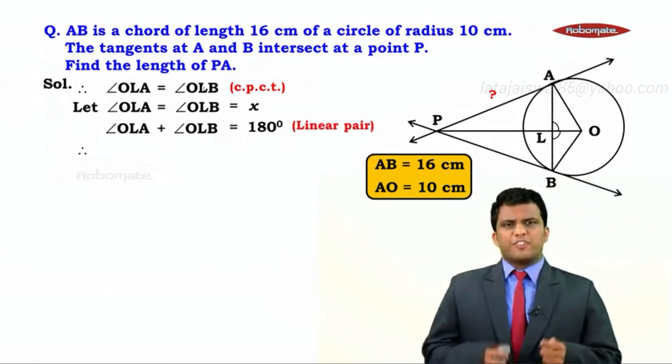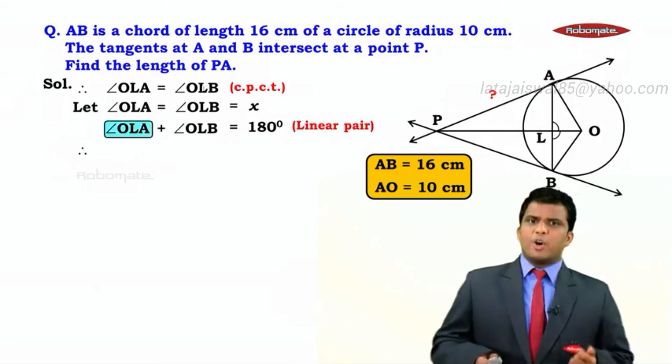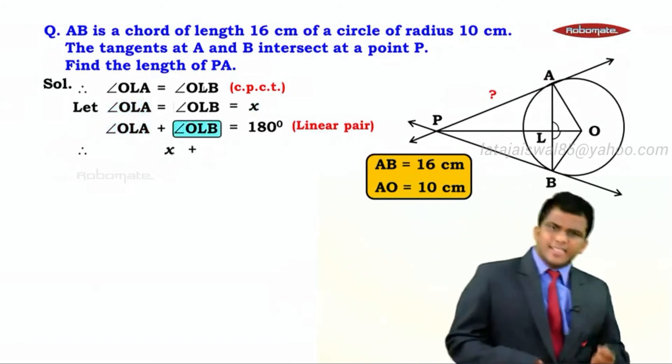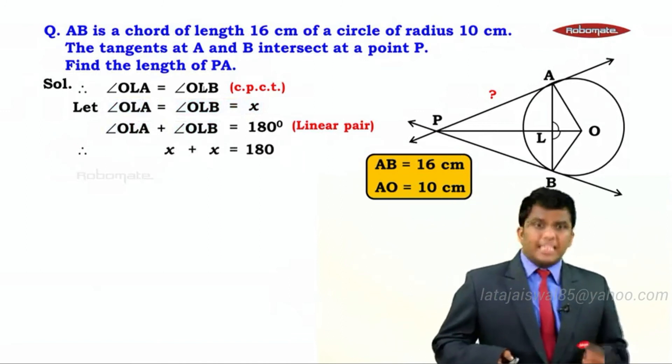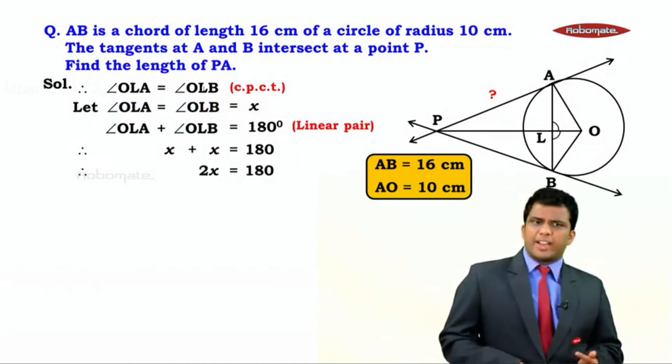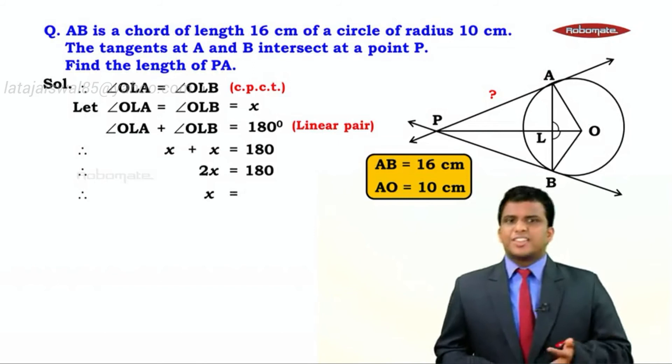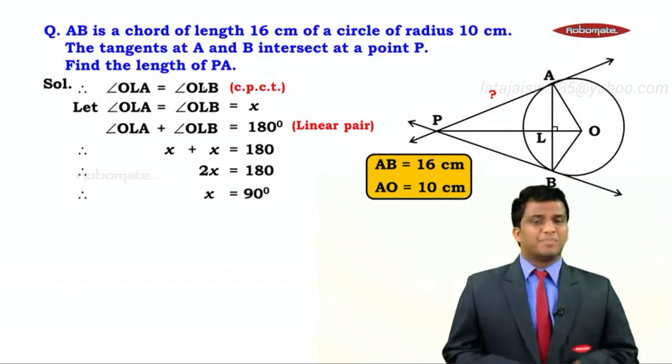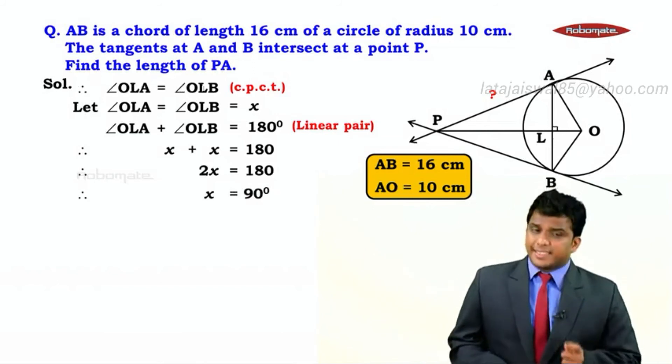What we do is, since we have their values that we assumed, we now write X plus X equals 180. That means 2X equals 180. That means X equals 90.